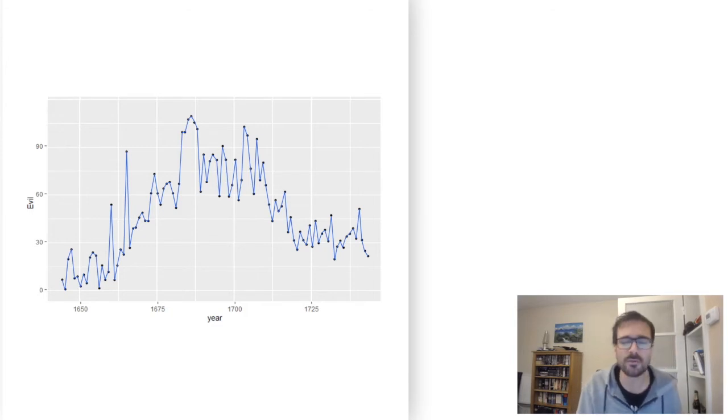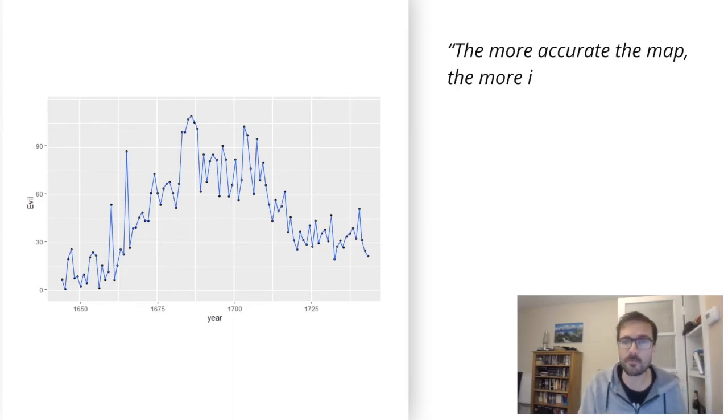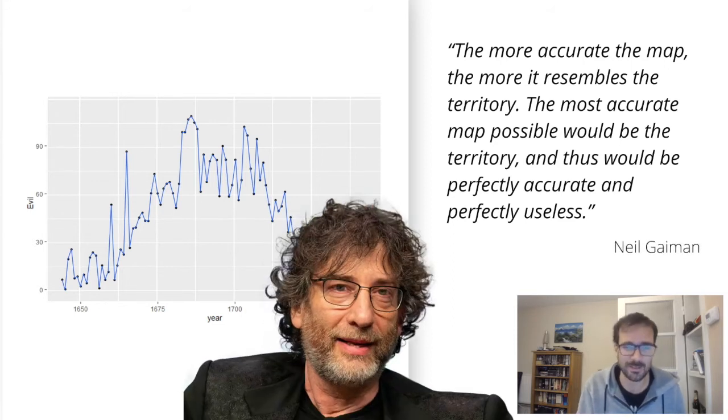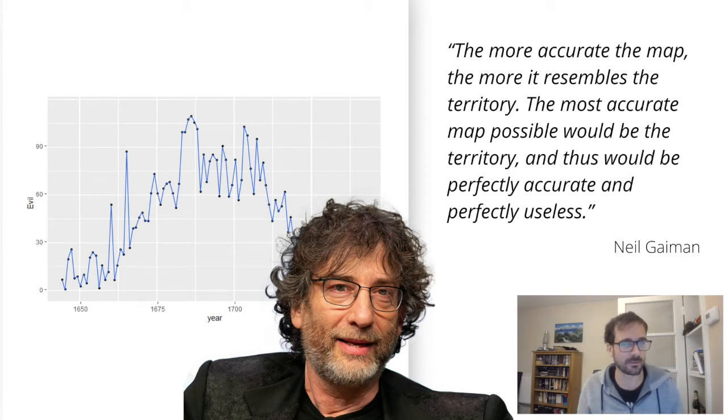There's another quote that I like to bring out at this point, this time not from a statistician, but I think it captures this idea pretty well. The more accurate the map, the more it resembles the territory. The most accurate map possible would be the territory and this would be perfectly accurate and perfectly useless. That's a quote from American Gods by Neil Gaiman. Very much not a statistician, but I think it gets at this idea very well, where if we try to overcomplicate things, we end up with something totally useless.